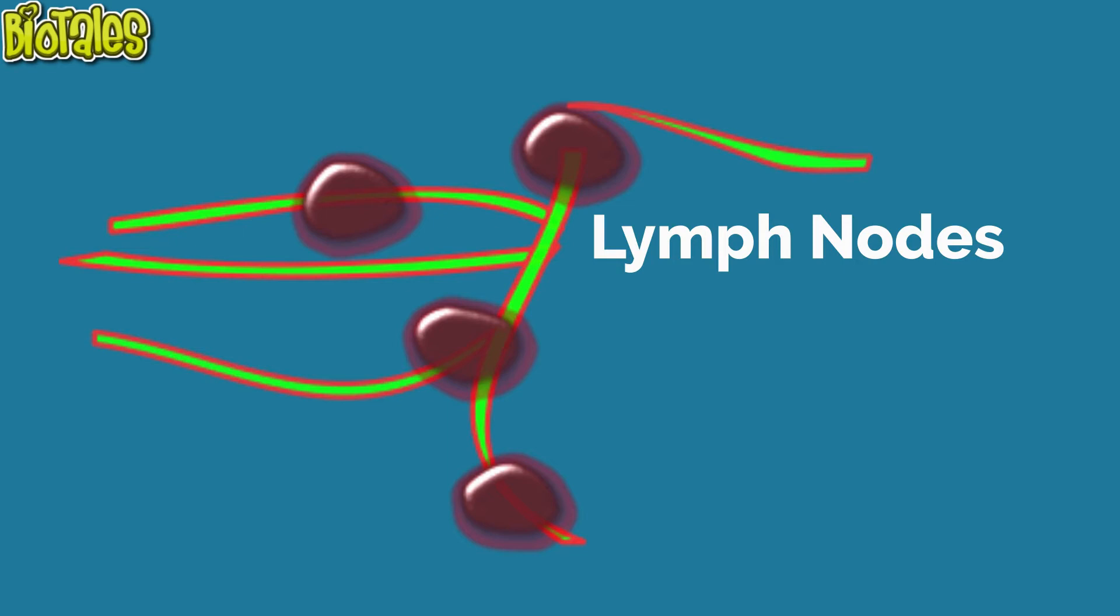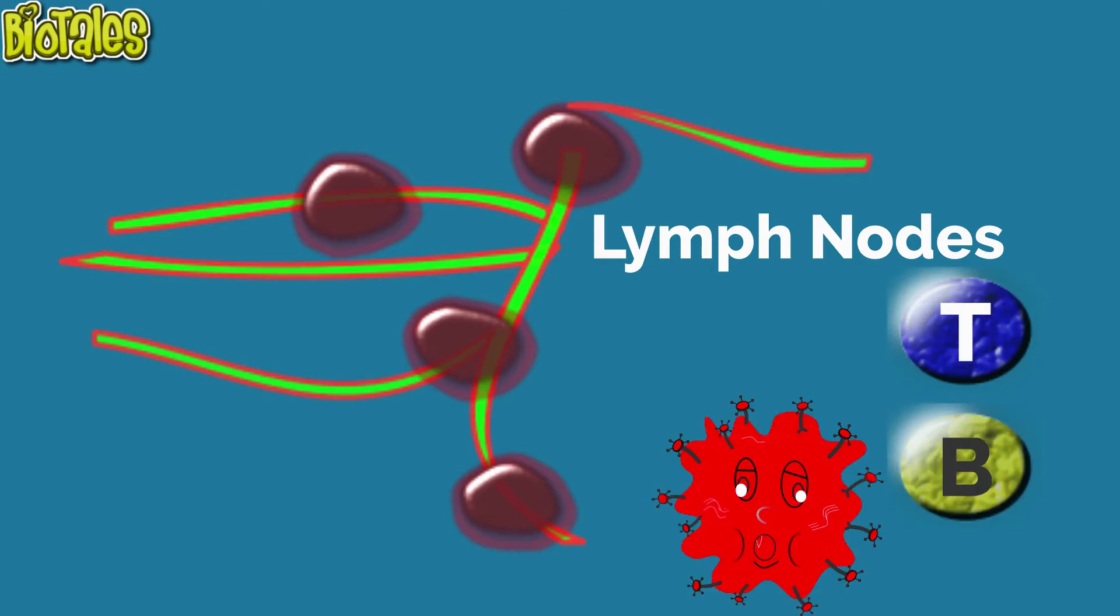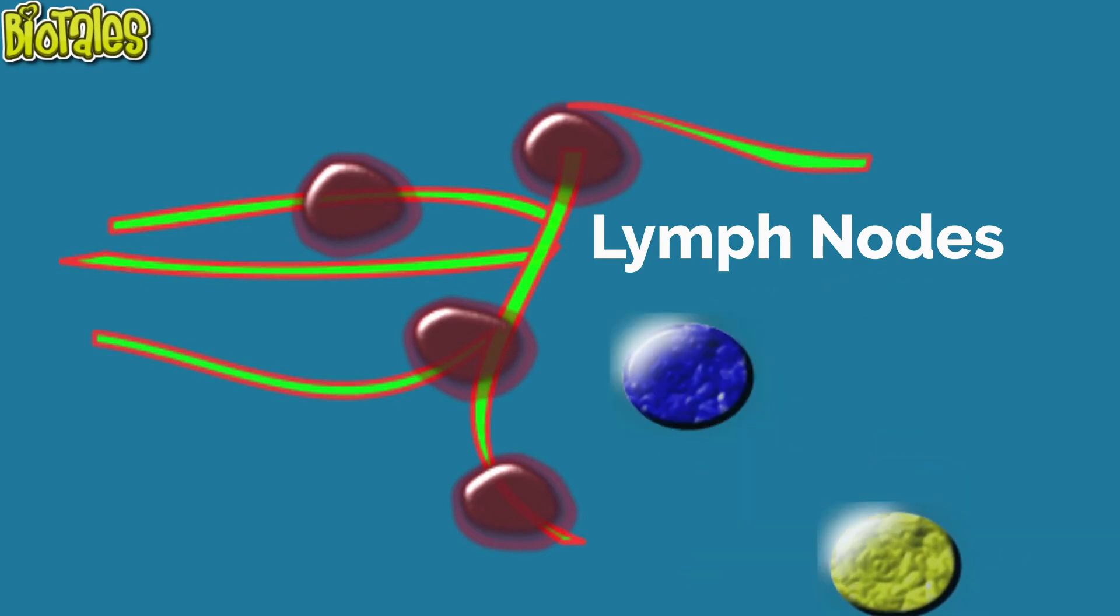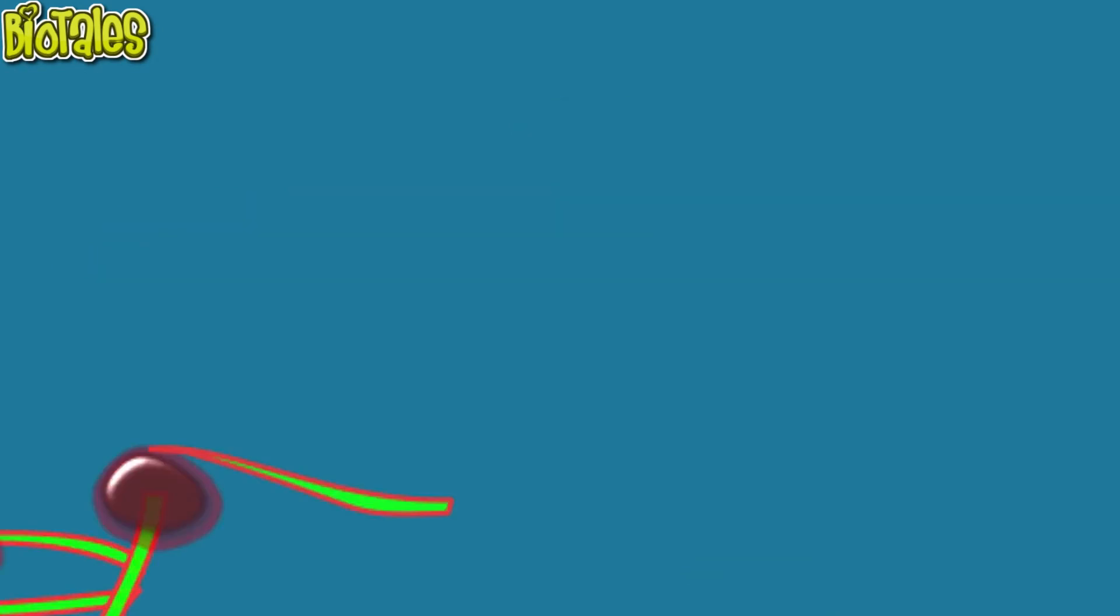Lymph nodes are the sites where T-cells and B-cells are activated and destroy microbes by immune response. Within lymph nodes,